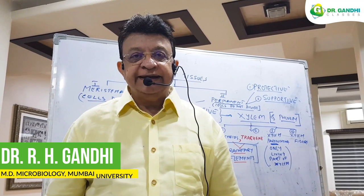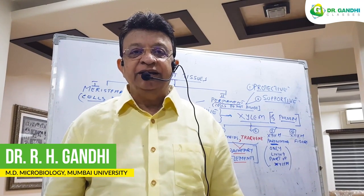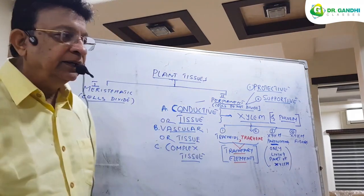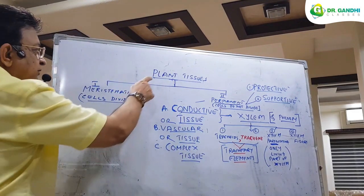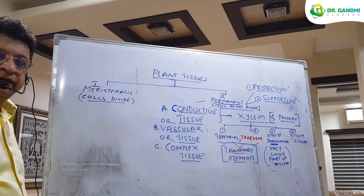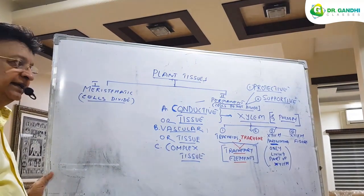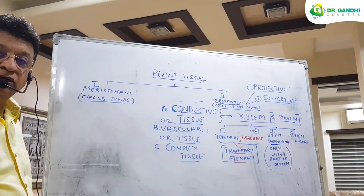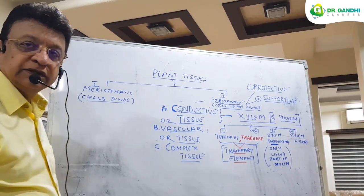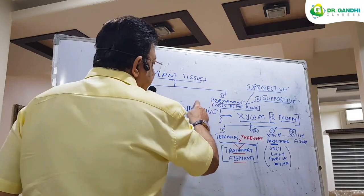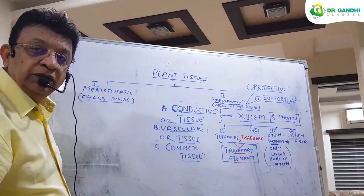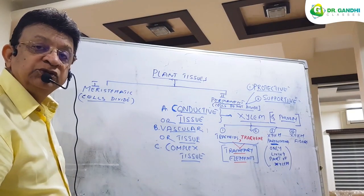Welcome students. We now begin with the second part of our study of plant tissue. I will take you to the board for a quick recap. In the first part of plant tissue we studied meristematic tissues in detail — their cells are capable of cell division. The second category of plant tissue was permanent tissues, which are non-dividing cells.